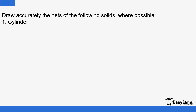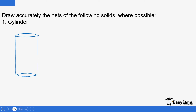We have an example here whereby we are supposed to draw accurately the nets of a cylinder. Let me just draw a cylinder here. So what happens if you try to cut this cylinder at a section, then you unfold this one here, also the other one here. Then you'll end up with something that looks like a rectangle.